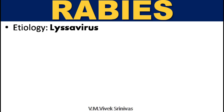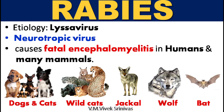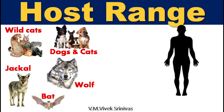Rabies. The disease is caused by the genus Lysa virus. Based on tissue tropism, this virus is having target towards the neuronal tissues, so they are termed as neurotropic virus. This virus causes fatal encephalitis in humans and in many mammals.